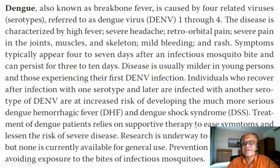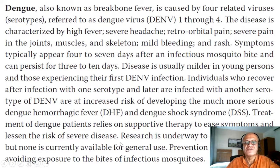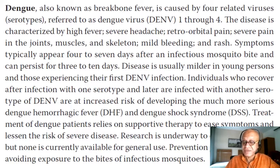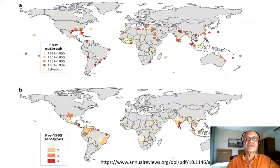Dengue hemorrhagic fever can progress to dengue shock syndrome. Treatment relies on supportive therapy to ease symptoms and lessen the risk of severe disease. Research is underway to develop a vaccine, but none is currently available for general use — we need to track this and keep it up to date. Prevention generally relies on avoiding exposure to bites from infectious mosquitoes.